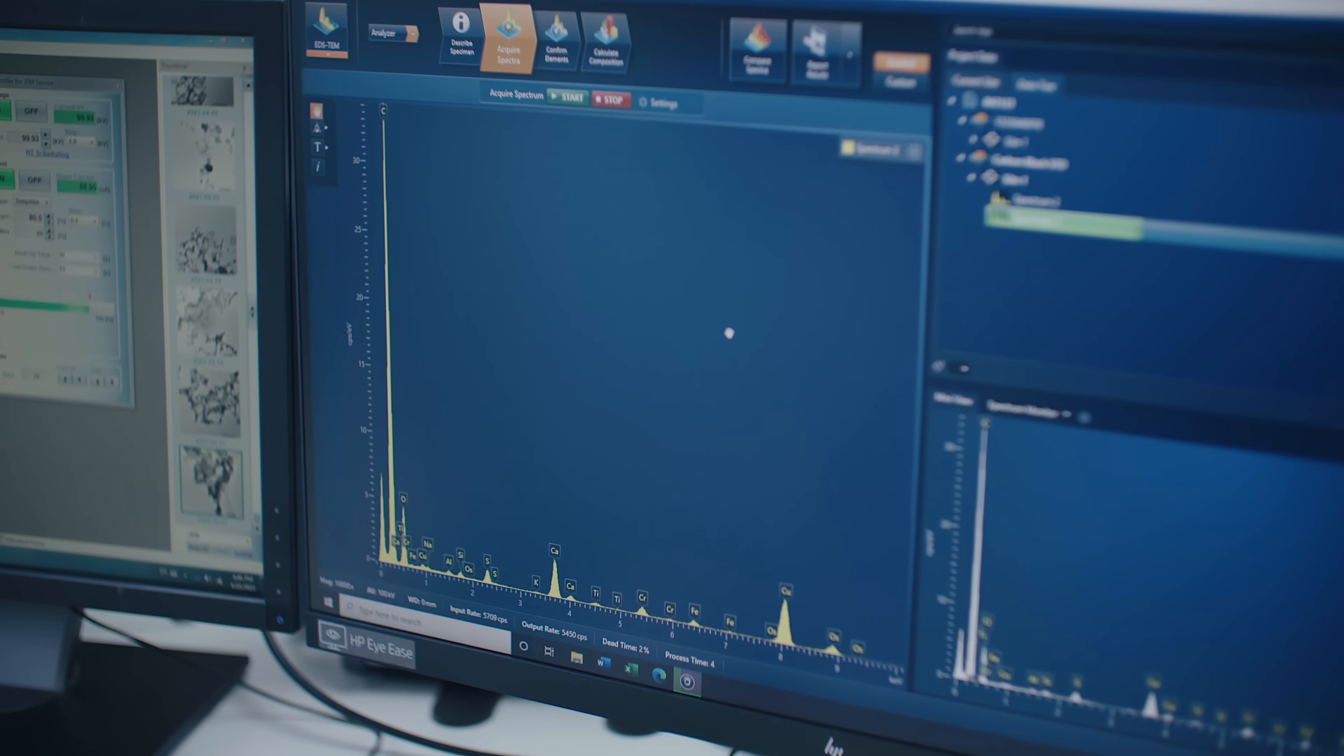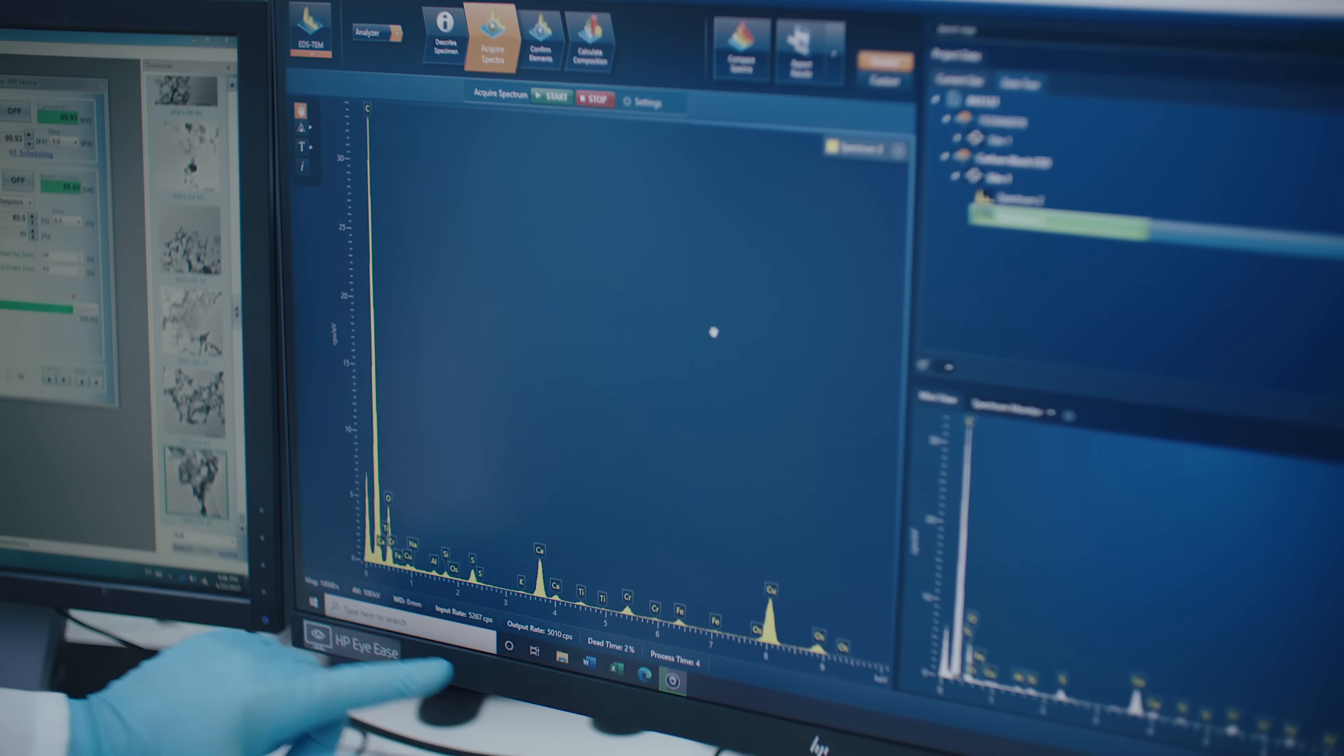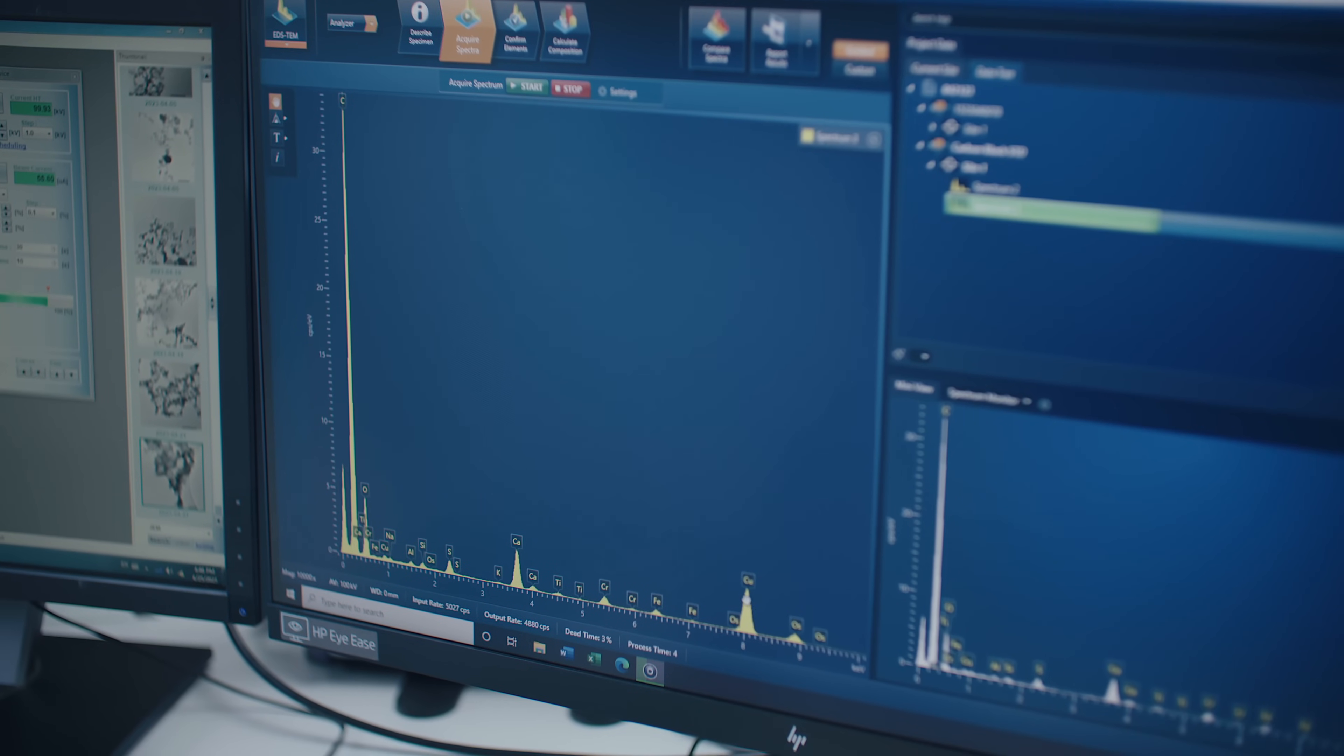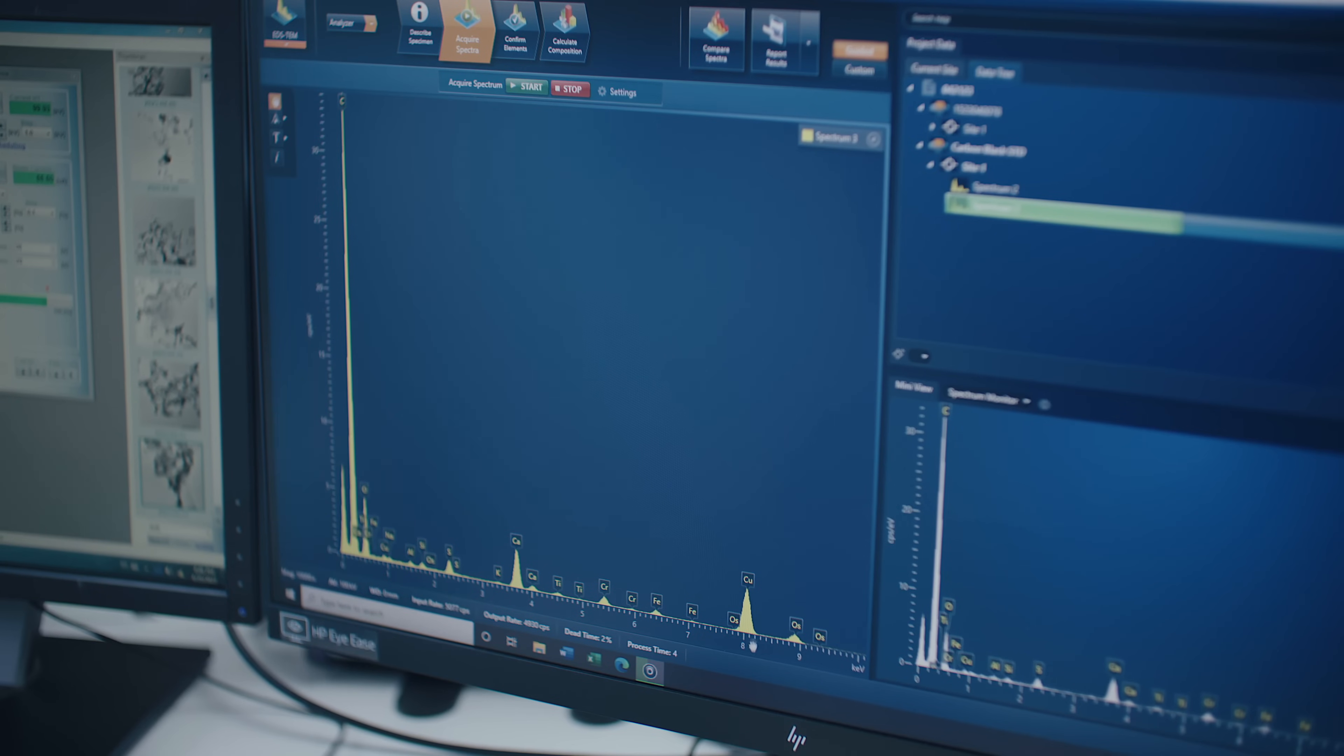So for this sample, we have a large carbon peak, a smaller oxygen peak, small calcium peak. Normally we ignore the copper peak here because the grid that the sample is mounted on is made of copper and that's what usually shows up.